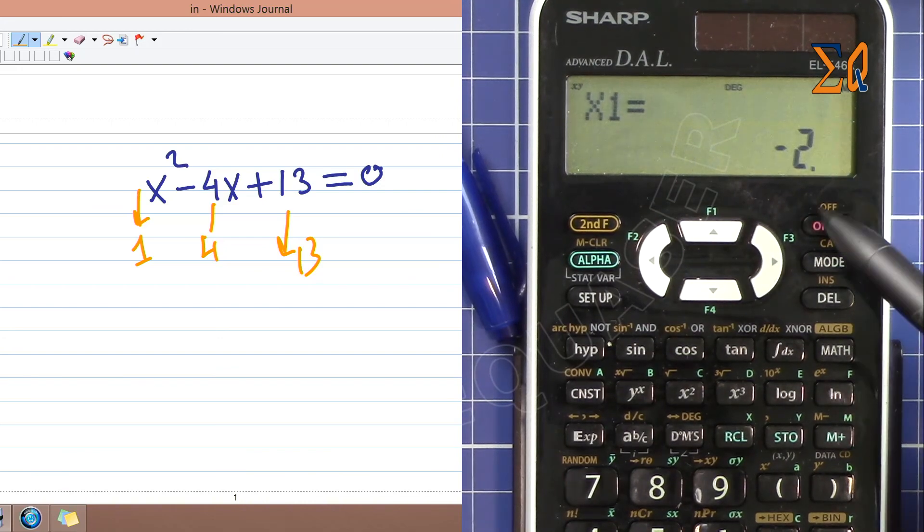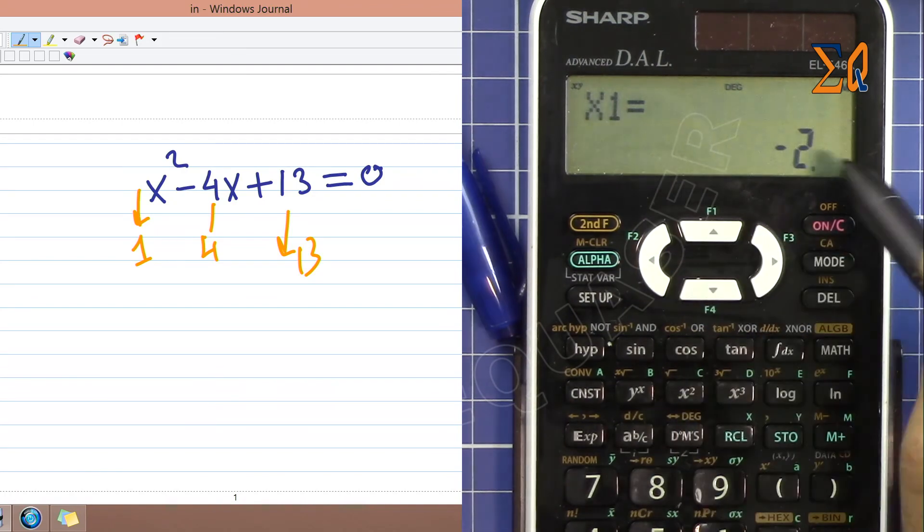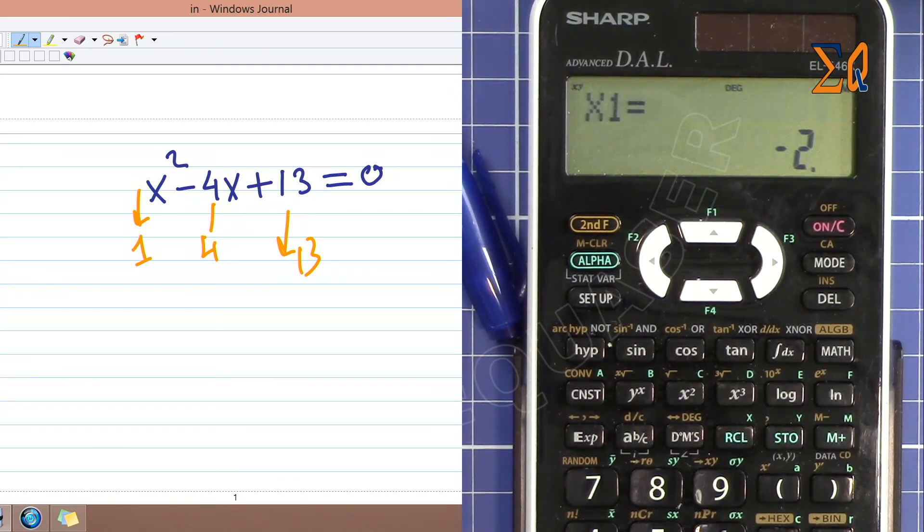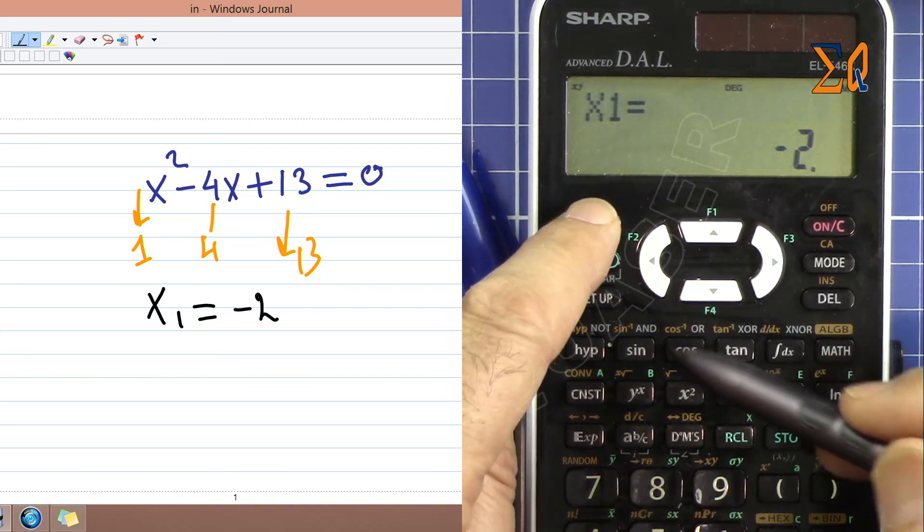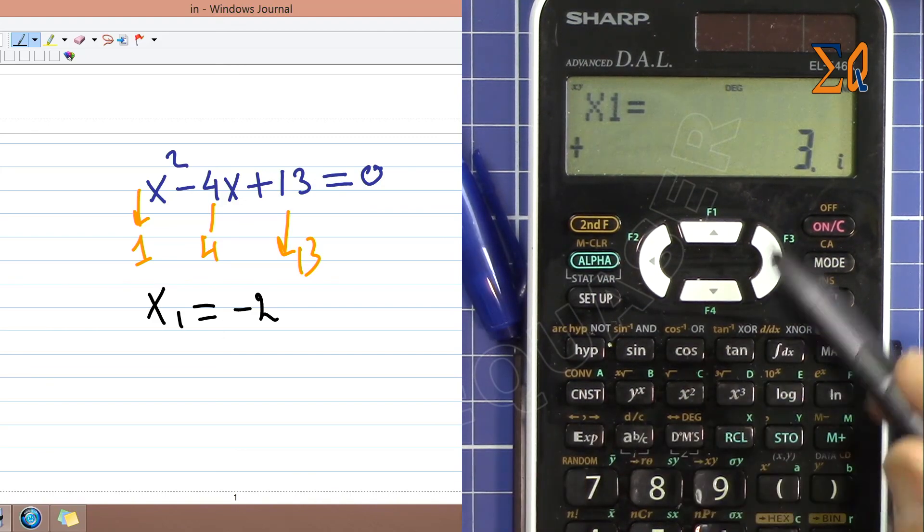When we solve this, pay attention here at the top - we have X and Y. When you see X and Y, it means this refers to imaginary. So this is -2. Now if I write it properly, x₁ is -2, and in order to see the imaginary part, press Shift and then this EXP or this arrow.